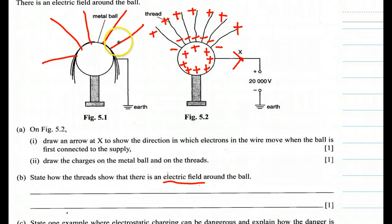Alternatively, you can also answer that the direction of the pattern or the direction of the thread actually shows the path. The word is the path where a small positive charge will move in an electric field and that is also acceptable.